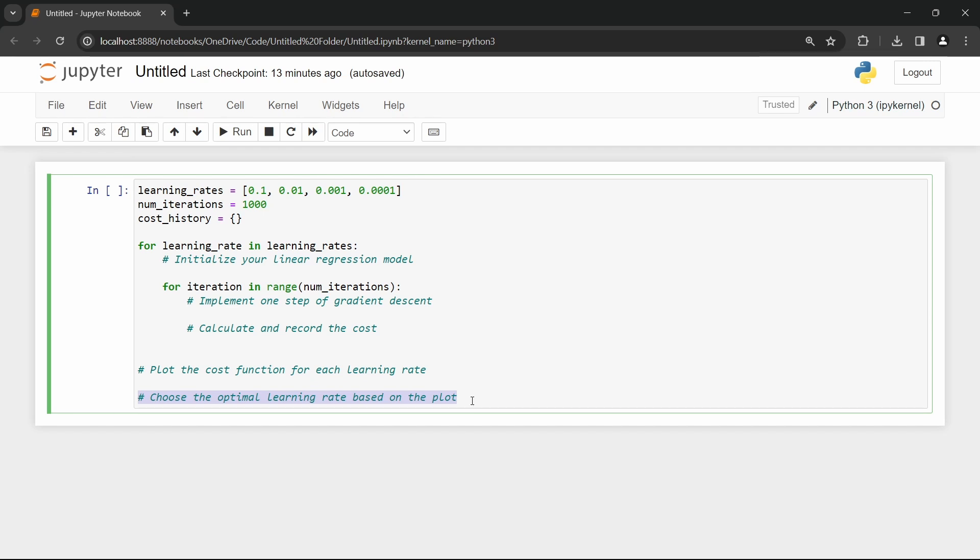So, now you know how to choose alpha. In the next video we will see a neat trick to improve gradient descent by scaling our features.